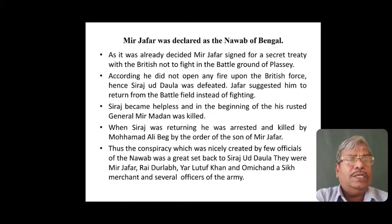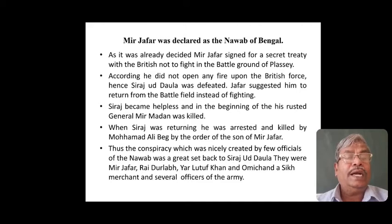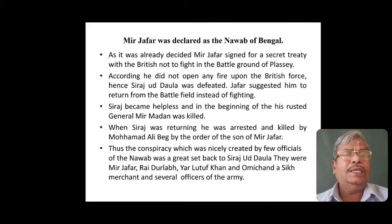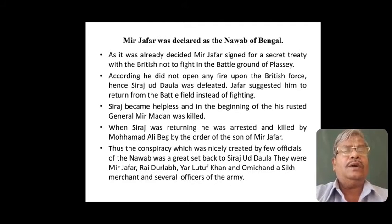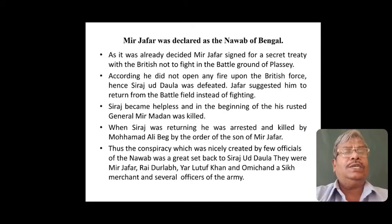Hence, Siraj ud-Daulah was defeated. Mirjafar had suggested to Siraj ud-Daulah to return from the battlefield instead of fighting. At that time, Siraj ud-Daulah was helpless, and at the beginning of the battle he had lost one of his most trusted generals, Mir Madan, who was killed in the battlefield. This was a great shock to Siraj ud-Daulah, and when he was returning, he was arrested and killed. The conspirators involved were Mirjafar, commander-in-chief of Siraj's army; Rai Durlabh, an officer; Yar Lutuf Khan; Umi Chand, a Sikh merchant; and several army officers of Mirjafar.